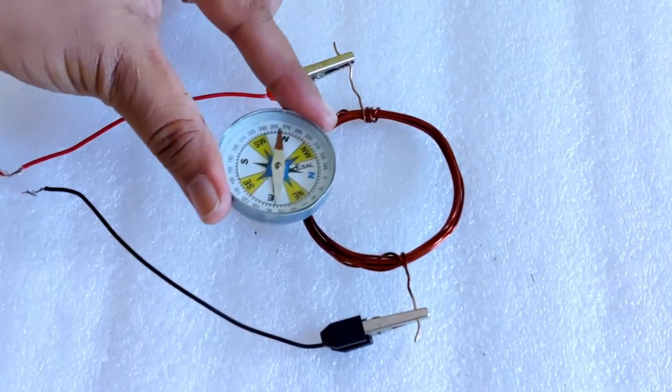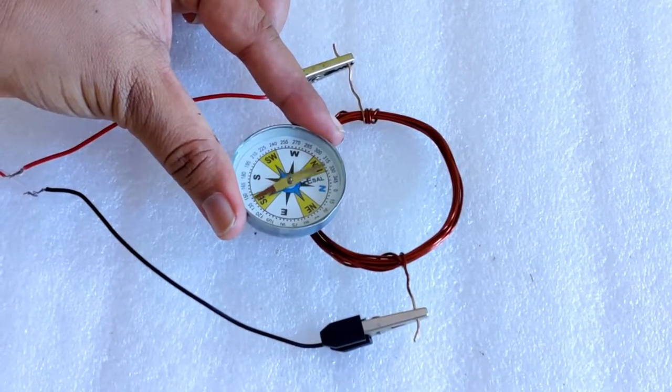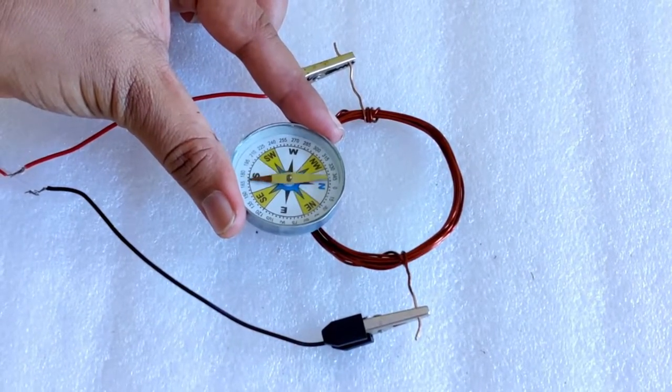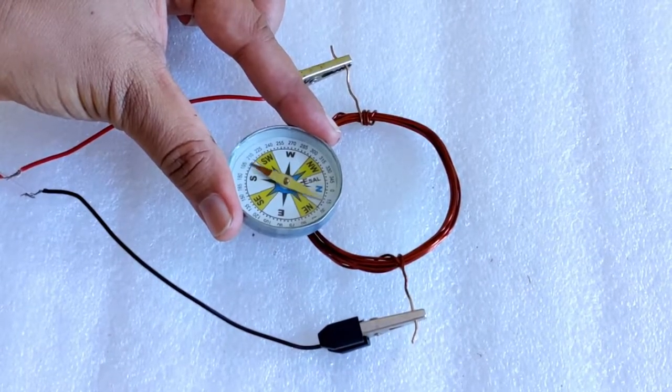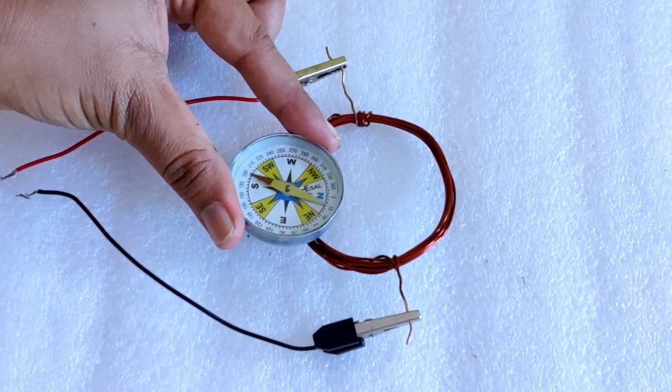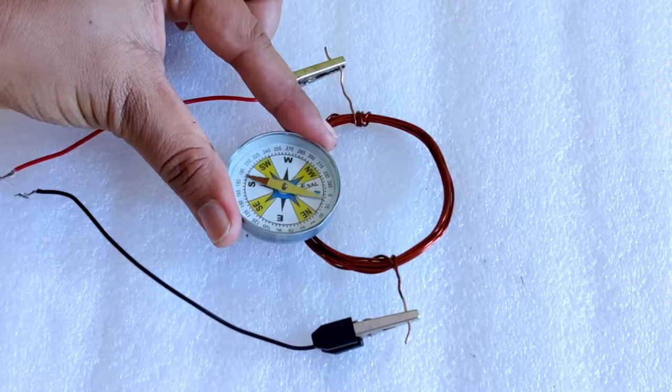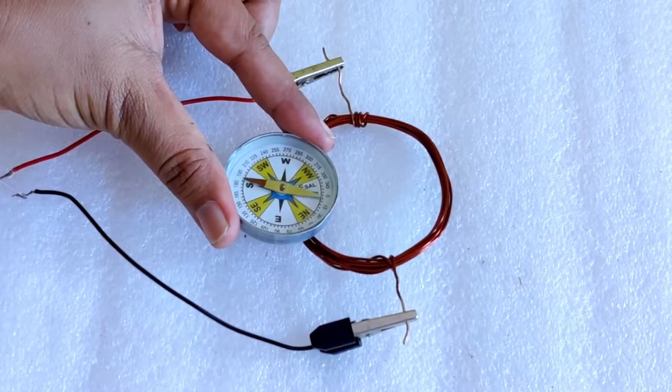Hold a magnetic compass over the coil. The needle of the compass deflects for a short while and then comes to rest. Observe the direction in which the magnetic needle is pointing.